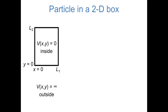To start this video, we'll be moving on to a two-dimensional box. Rather than just having a one-dimensional line segment, we now have a two-dimensional rectangle, where the box ranges from x equals 0 to x equals L1, and from y equals 0 to y equals L2. Like the particle in a one-dimensional box, the potential energy equals 0 inside the box, and it equals infinity outside the box.